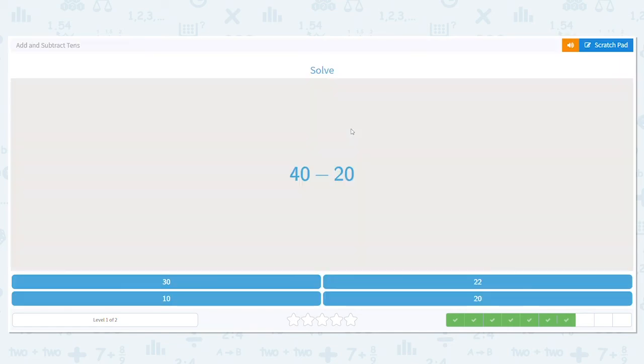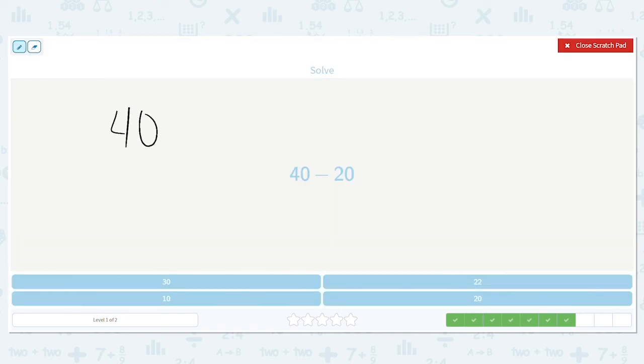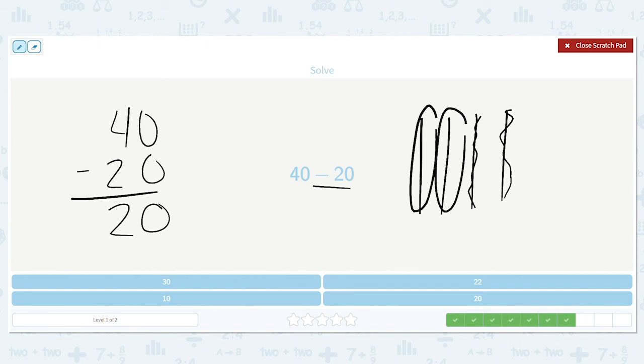How about this one? 40 minus 20. 0 minus 0 is 0. 4 minus 2 is 2. So 40 minus 20 equals 20. That's just the way I chose to answer this one. You could also do the sticks. 10, 20, 30, 40. Get rid of two of them. 1, 2. So I have 10, 20 left.